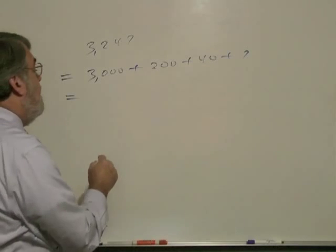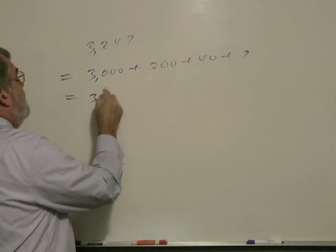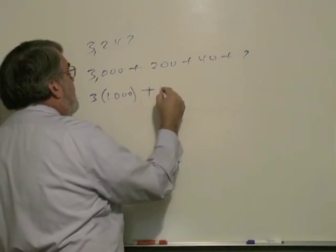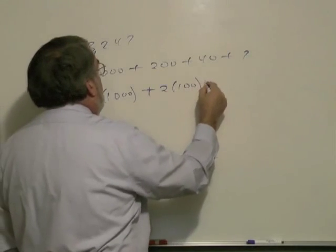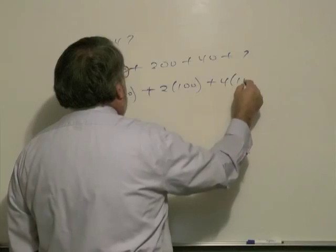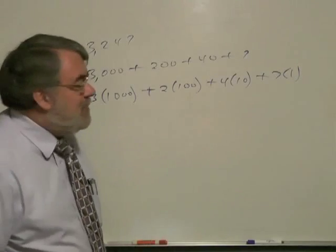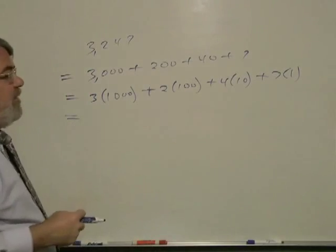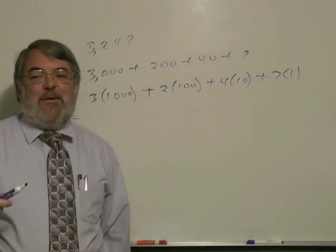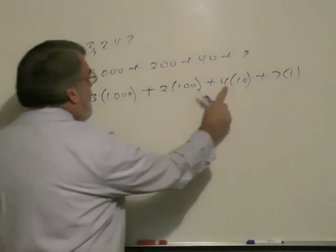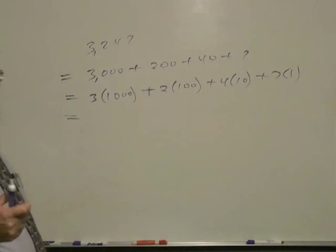3,000 is 3 times 1,000. 200 is 2 times 100. 40 is 4 times 10. And 7 is 7 times 1. Here's where the decimal part comes in—each place value is a specific power of 10.